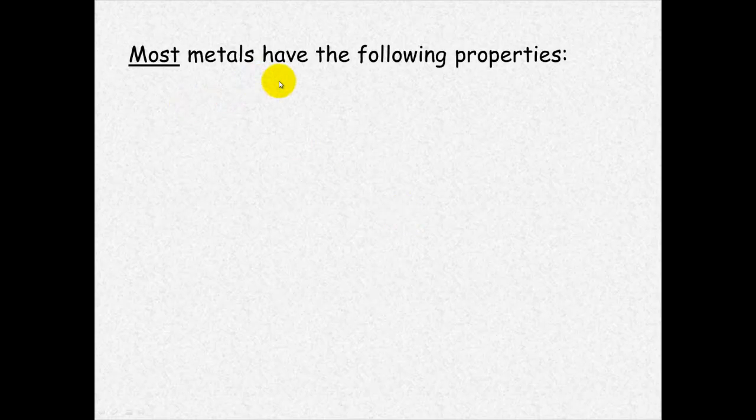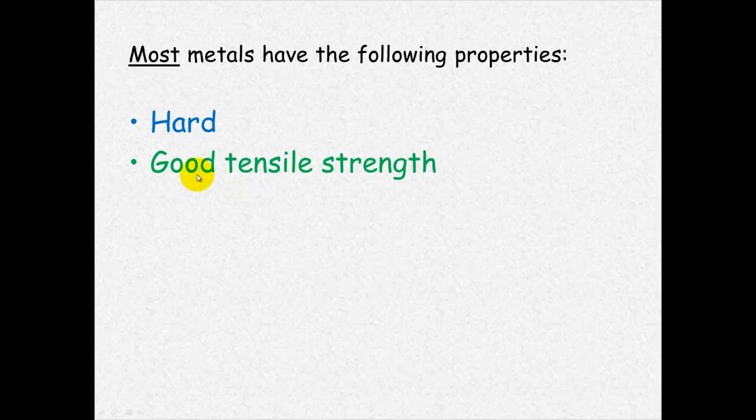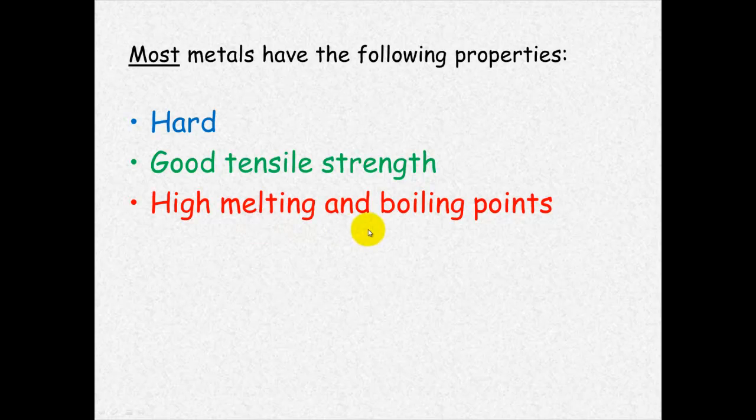Most metals also have the following properties: they're hard, they've got good tensile strength, and by tensile strength we're talking about the ability to withstand a pulling force. They've got high melting and boiling points and high density. Now as I said, most metals have those properties. Straight away you can think of mercury which doesn't follow any of these because it's a liquid at room temperature, so it's got a low melting point, low boiling point, it's not hard, it doesn't have high tensile strength nor high density.